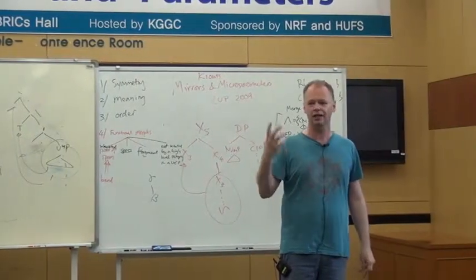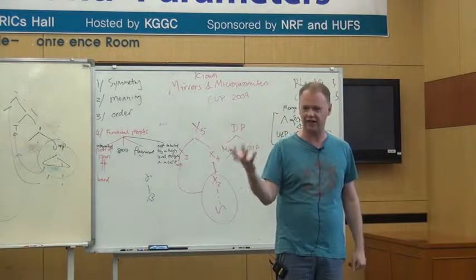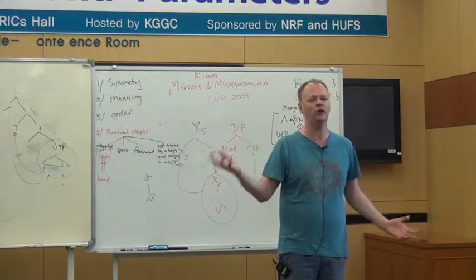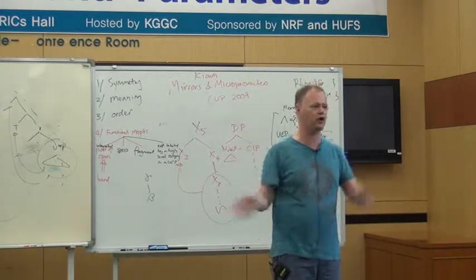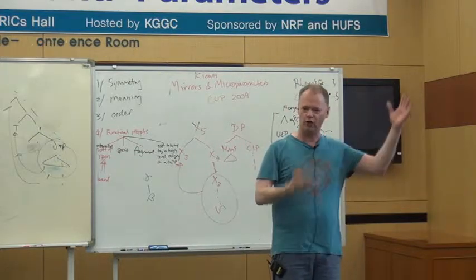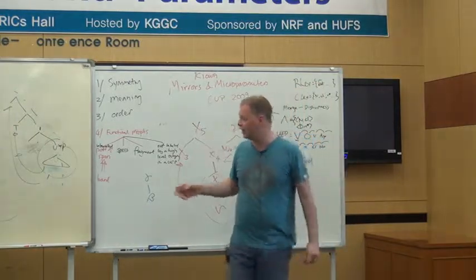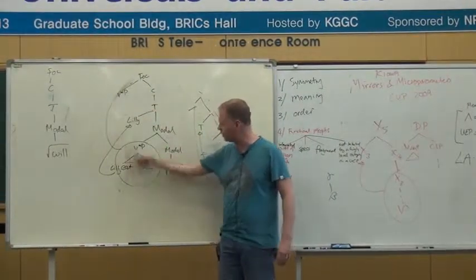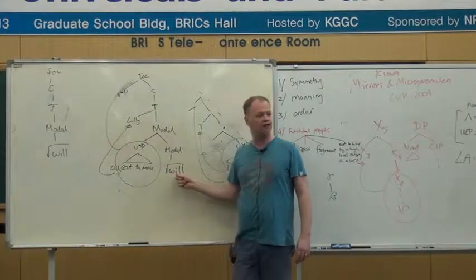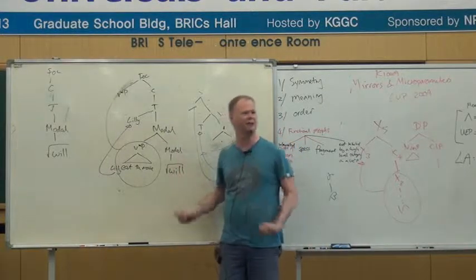Most roll-up analyses actually don't have any semantic content in the functional head that causes the roll-up. In fact, that's the whole point of roll-up. That's why Kayne has this little WP, which is a word-order phrase — it's to get the word order right, it's nothing to do with the meaning or semantics. My system only allows these apparent things that look like a roll-up configuration when you've got a semantically contentful category, which restricts apparent roll-up massively. There's no real roll-up.